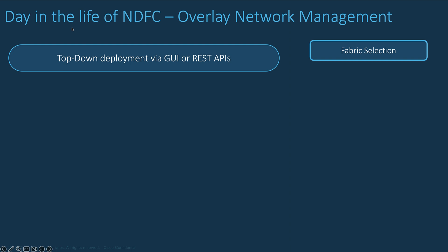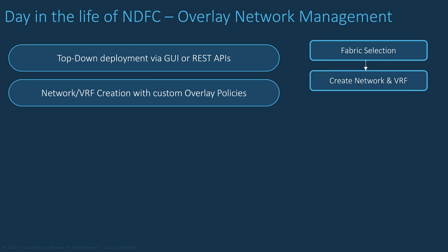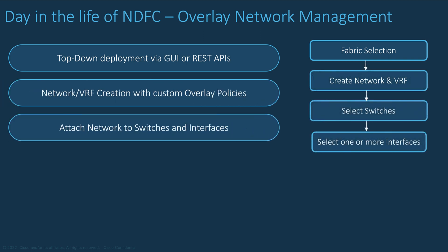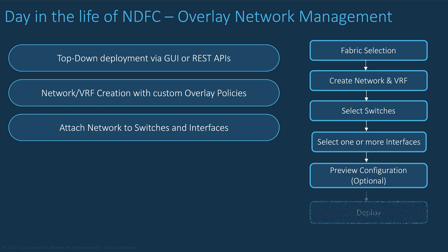The RESTful API approach to automate the deployment of Overlay Networks will be covered in the next sections. Regarding the deployment of the network, the first action from the network page is to select the fabric where you want to create or operate the network. Create the network and VRF with the Overlay parameters, then attach the network to the concerned switches and interfaces. You can always preview the configuration pushed by NDFC to each device, and then deploy. It generally takes several seconds based on the number of switches and interfaces.